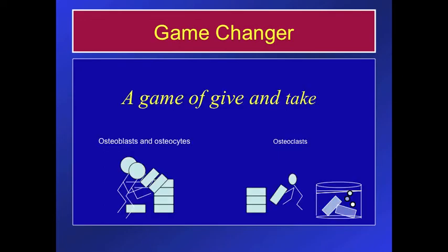Look on the right — see those osteoclasts? There are fewer of them, they're smaller, and they're working slower. So they're dissolving the bone more slowly while the osteoblasts and osteocytes are making it at the same rate. Isn't that good? We're going to have more bone than we had before — like more income and less expenditure. That's got to be good, doesn't it? Answer: I don't think so.